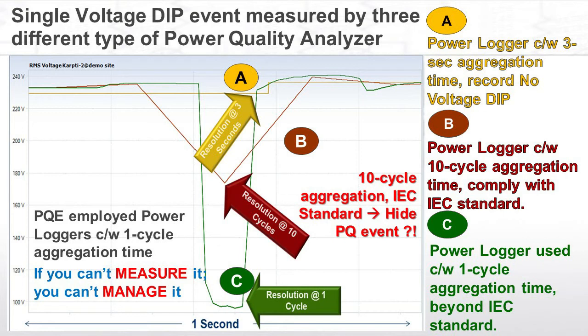Conclusion: Power quality analyzer C, having the finest aggregation time — that is, single-cycle aggregation time — measured a more accurate and correct voltage dip compared to analyzers with 10-cycle and 3-second aggregation times. This test result reminds us of the slogan: if you cannot measure it, you cannot manage it. Therefore, it is of utmost importance to use a single-cycle aggregation time power quality analyzer for detailed and accurate on-site voltage dip measurement.